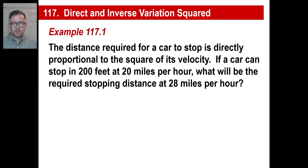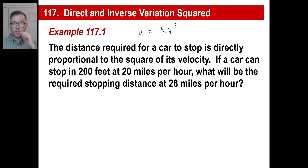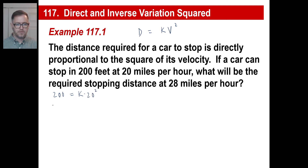The distance required for a car to stop is directly proportional to the square of its velocity. The distance is directly proportional, so we'll have K times V squared — that's our basic equation. The car can stop in 200 feet at 20 miles an hour. We're trying to find K times 20 squared. So 200 equals K times 20 squared, which is 400. Divide by 400: 200 divided by 400 means K is 0.5, or one half.